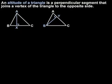Note that segment BY is also an altitude of triangle ABC because one of its endpoints, B, is a vertex of the triangle, and its other endpoint, Y, is located on the opposite side of the triangle such that segment BY is perpendicular to the opposite side, AC.